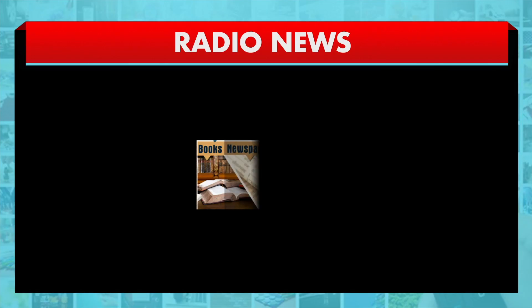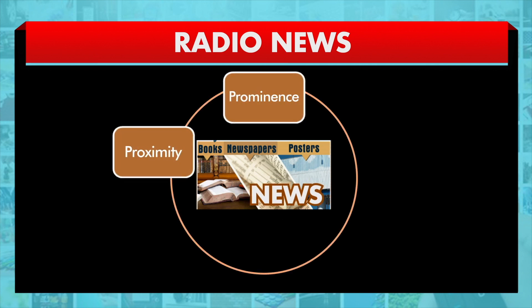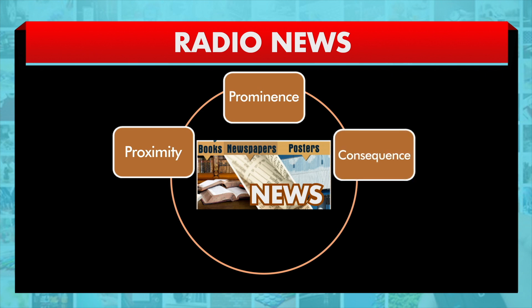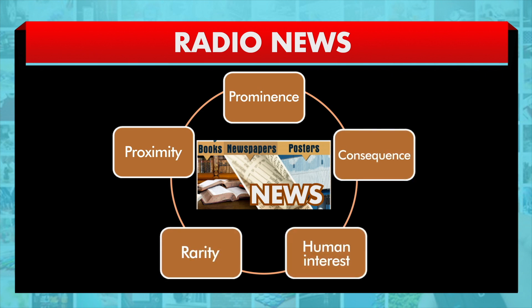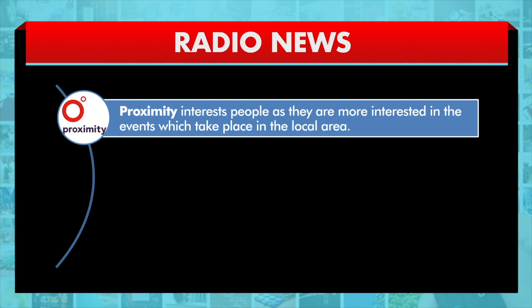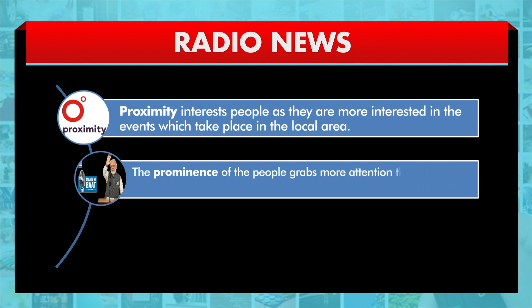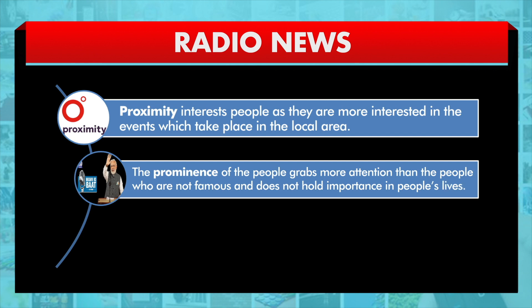News is often weighted by its qualities, which include proximity, prominence, consequence, rarity and human interest. Proximity interests people as they are more interested in events which take place in the local area than events at far-off places. The prominence of people grabs more attention than people who are not famous and do not hold importance in people's lives.